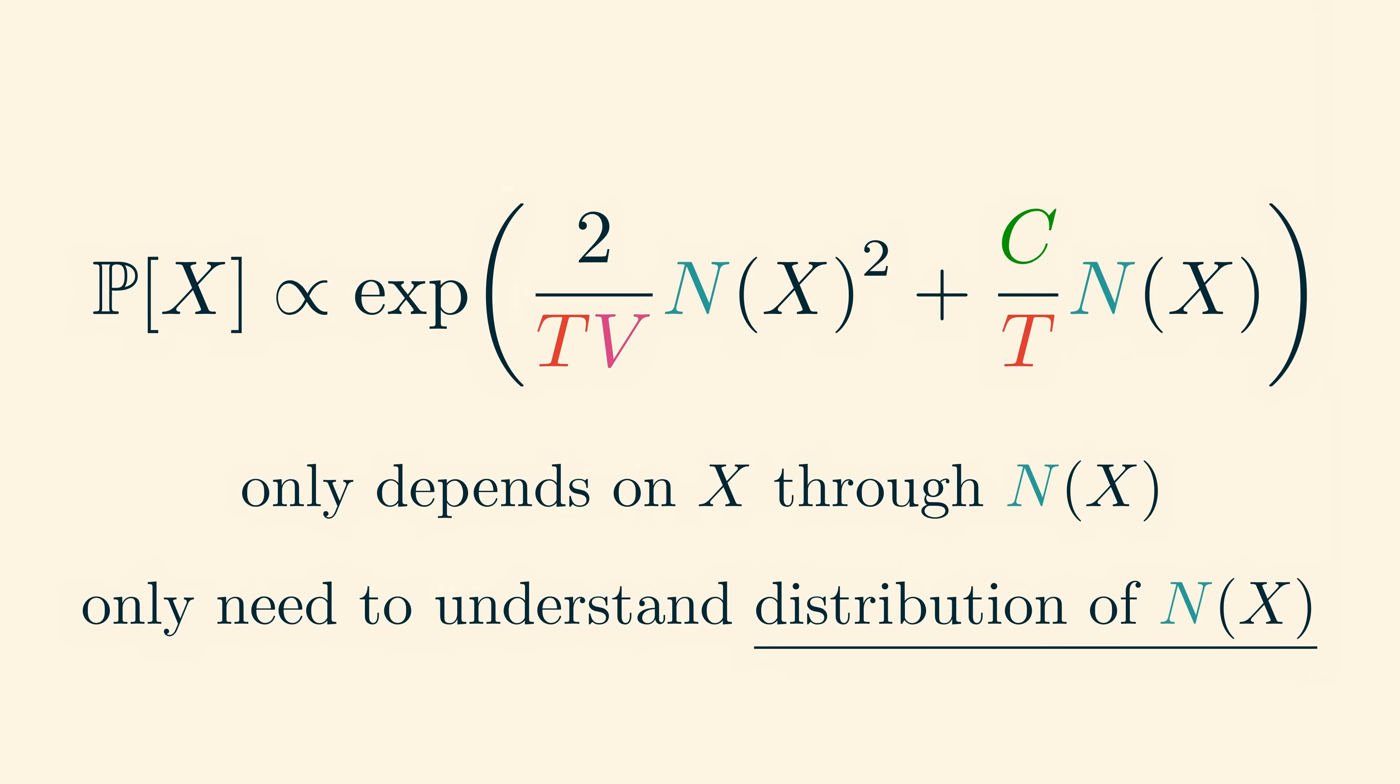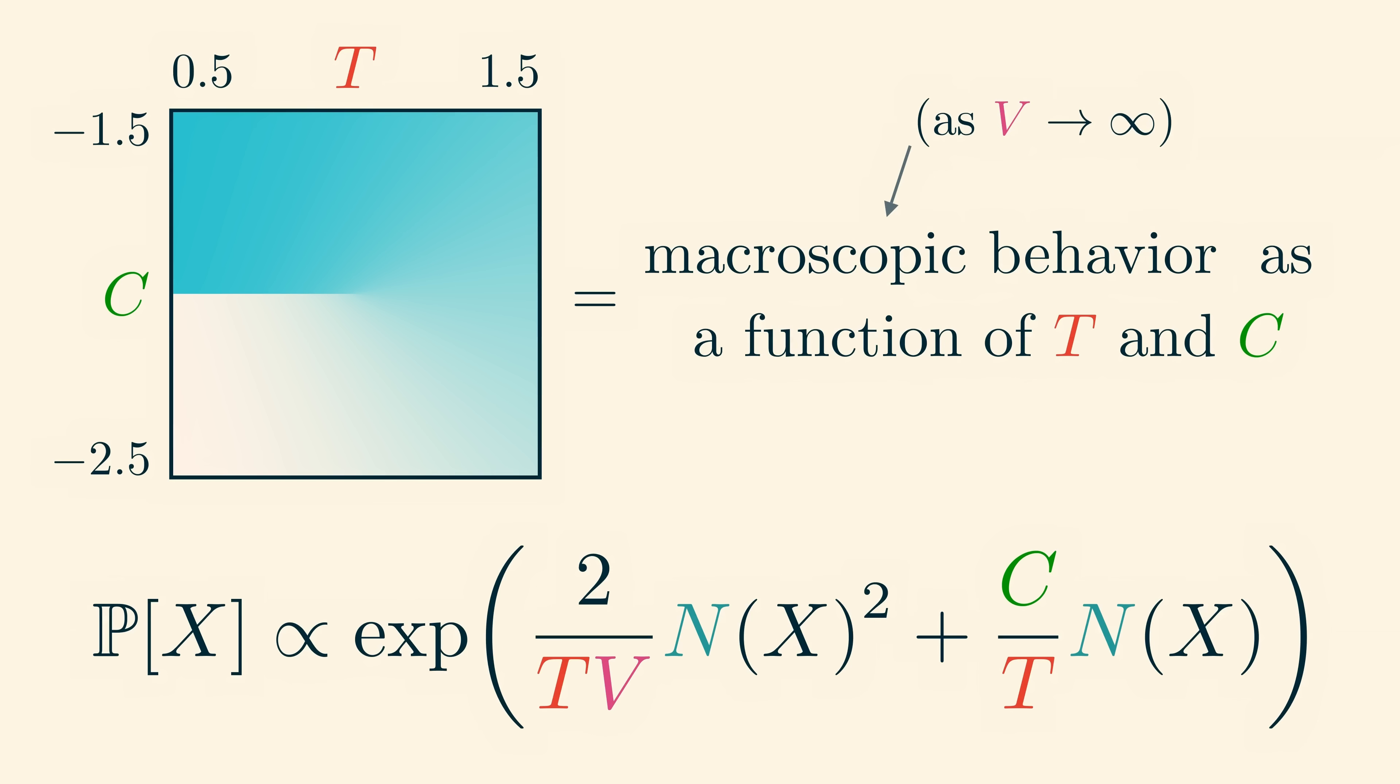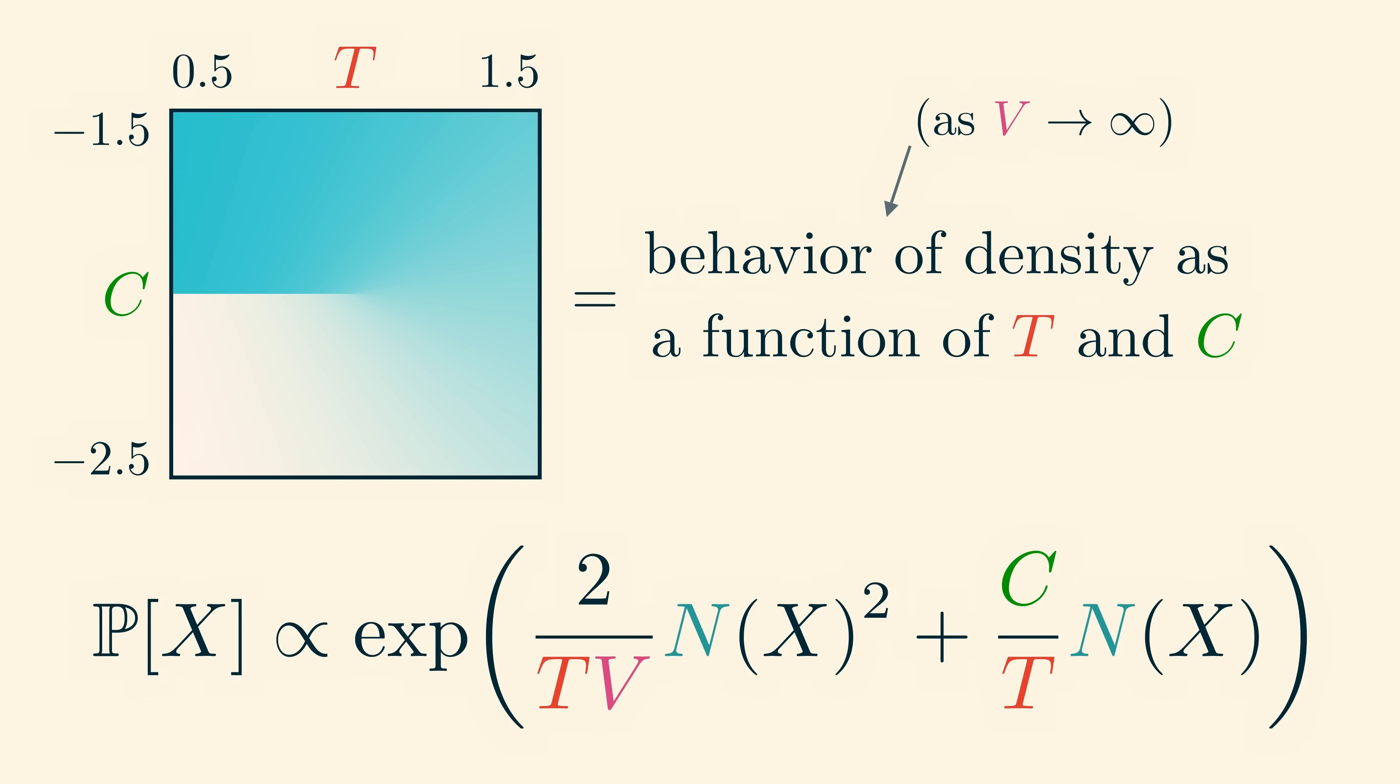We really want to understand the phase diagram of this model, which is a description of the macroscopic behavior as a function of t and c. Last time we used the density of molecules as our notion of macroscopic behavior, and conveniently the density is just n of x over v, meaning that the Boltzmann distribution can also be written in terms of the density directly.